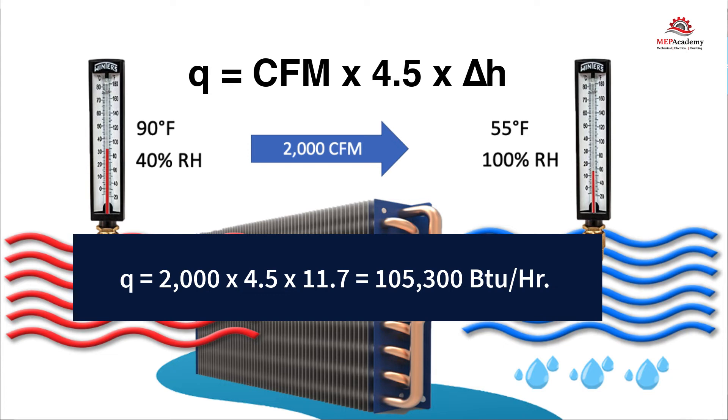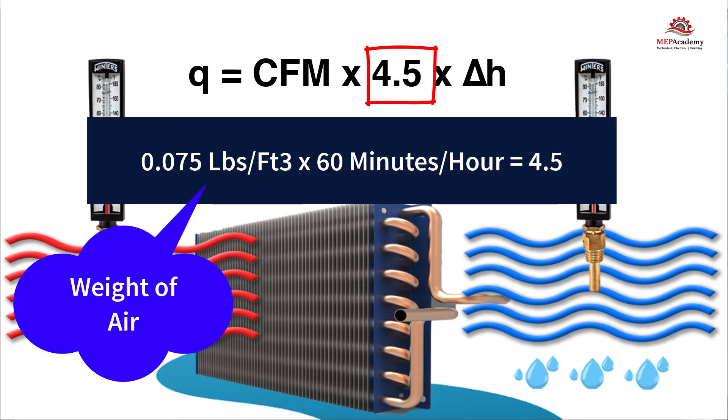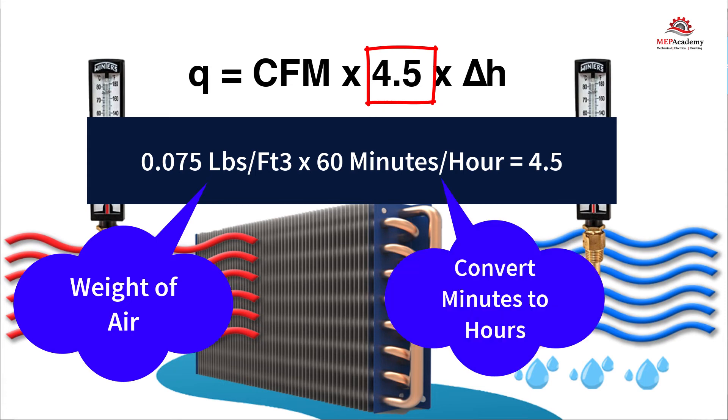Now we can quickly explain where the value of 4.5 in the calculation is derived from. First we have the weight of air at 0.075 pounds per cubic foot. Then we have the conversion of minutes into hours.